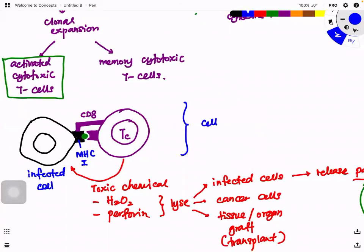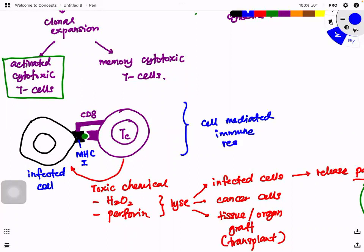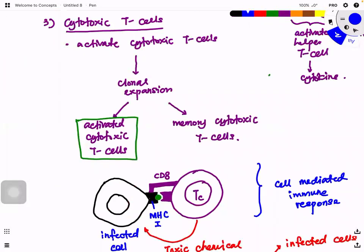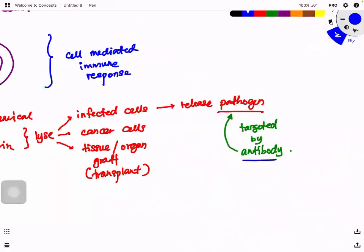The entire process involving cytotoxic T cells killing infected cells is termed cell mediated immune response. If the pathogens are not exposed, there is no chance to kill them because they hide inside the infected cells. Once the cells are lysed, the pathogens are released and can be targeted by antibody. This leads us to talk about another process involving B cells.